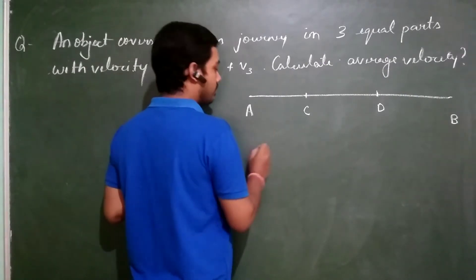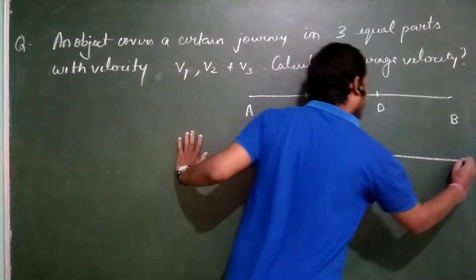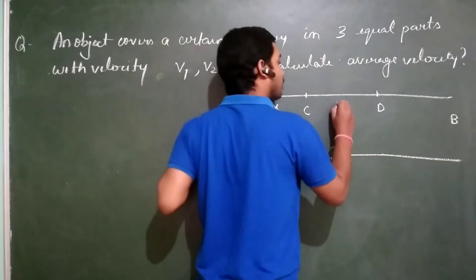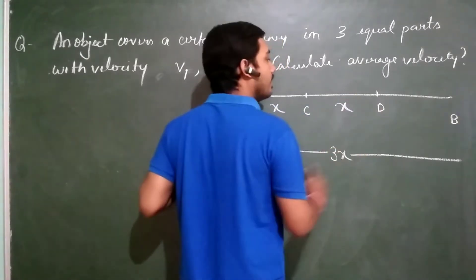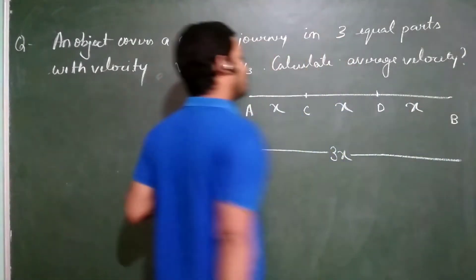Just suppose the total distance taken is 3x, so distance from A to C will be x, distance from C to D will also be x and distance from D to B is also x.